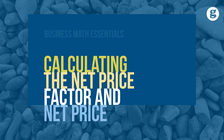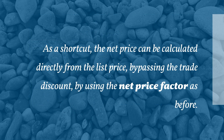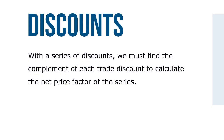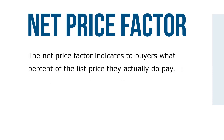Trade discounts are frequently offered by manufacturers to wholesalers and retailers in a series of two or more, known as a chain or series of trade discounts. As a shortcut, the net price can be calculated directly from the list price, bypassing the trade discount by using the net price factor. The net price factor is a complement of the trade discount rate. With a series of discounts, we must find the complement of each trade discount to calculate the net price factor of the series. The net price factor indicates to buyers what percent of the list price they actually pay.